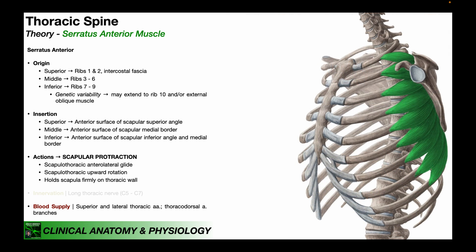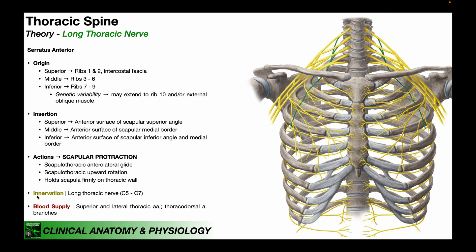The blood supply to the serratus anterior is via the superior and lateral thoracic arteries, and also via branches of the thoracodorsal artery. The serratus anterior muscle is innervated by the long thoracic nerve, which has contributions from nerve roots C5, C6, and C7. In rare cases there is some contribution from C8, though it's mainly C5 through C7. These roots fuse together into the long thoracic nerve.